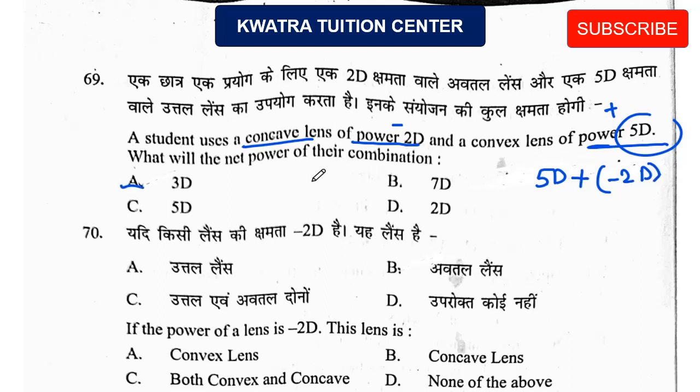Next: If the power of a lens is −2D, what type of lens is it? If the power is negative, the focal length is negative — which means it is a concave lens. So option B is correct.